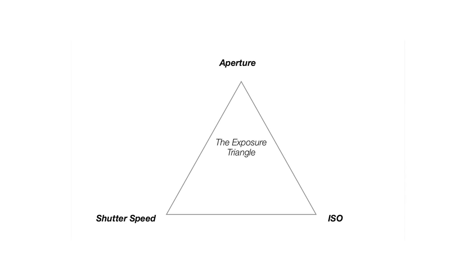When we change exposure with any of the three factors — ISO, shutter speed, or aperture — the brightness is controlled. ISO is the light sensitivity; shutter speed is the amount of time you're actually taking the picture; and aperture is the size of the hole. Regardless of which factor you are controlling, if you change any of those factors by a stop of light, you are either cutting the light in half if you reduced it by a stop, or doubling the light if you added a stop.